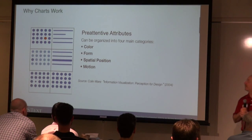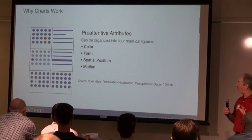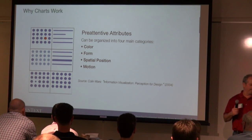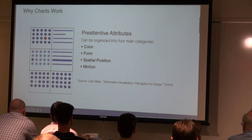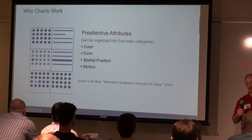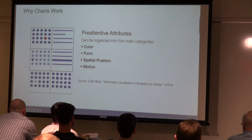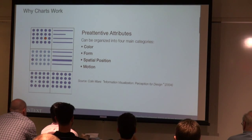So what are the pre-attentive attributes? There are actually four of them: color, form, spatial position, and motion. The last one is not really applicable to charts except in very specific scenarios. But we'll talk about all four attributes.